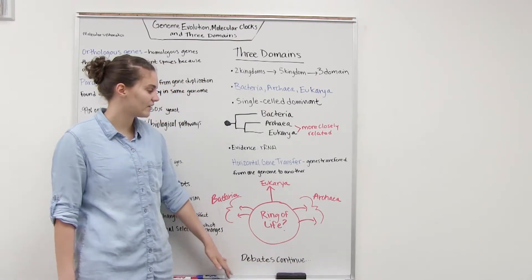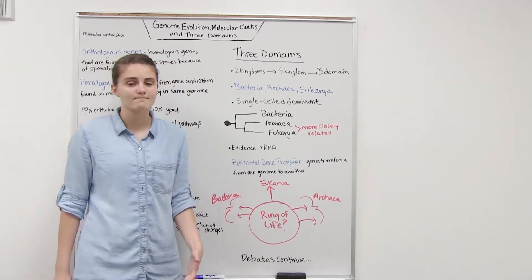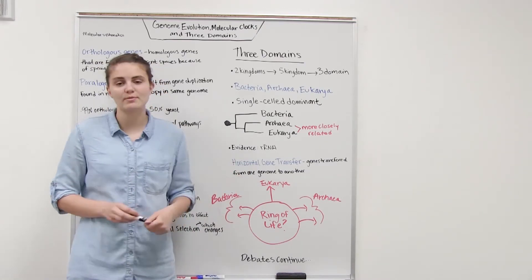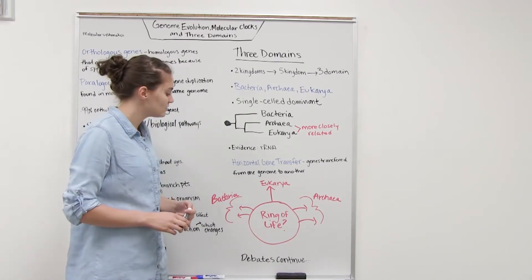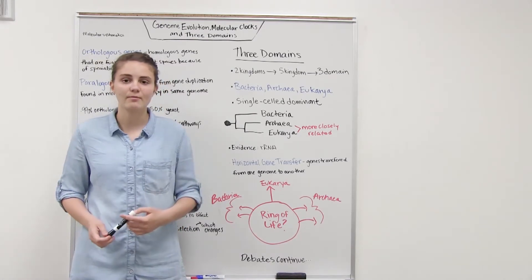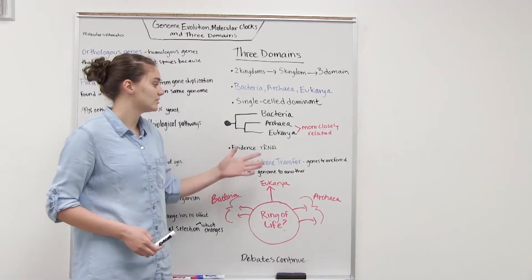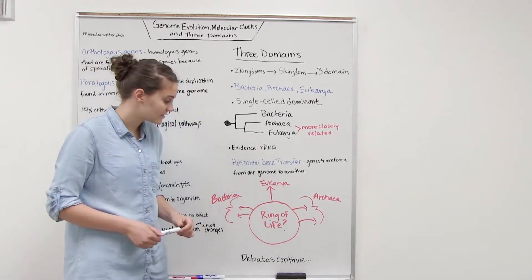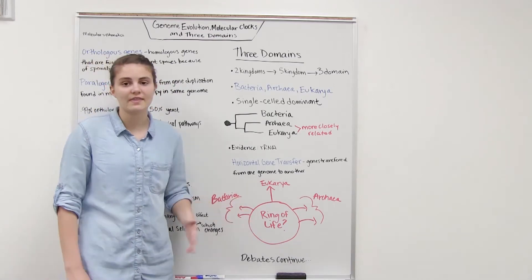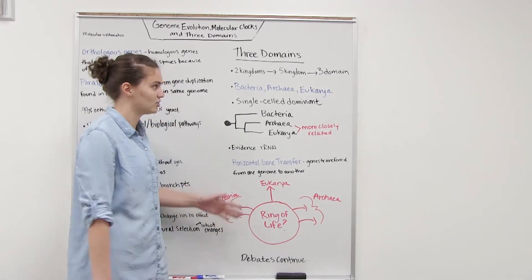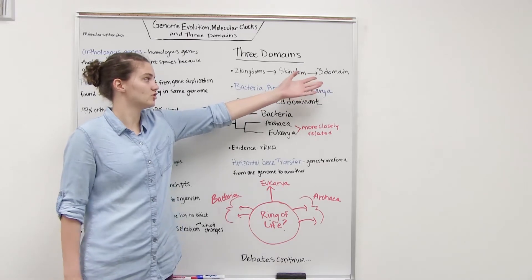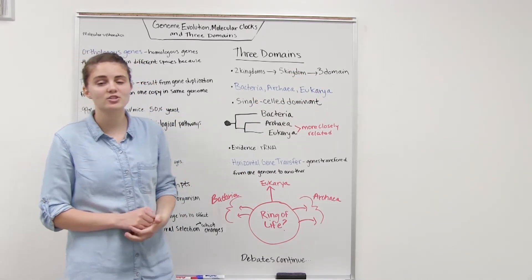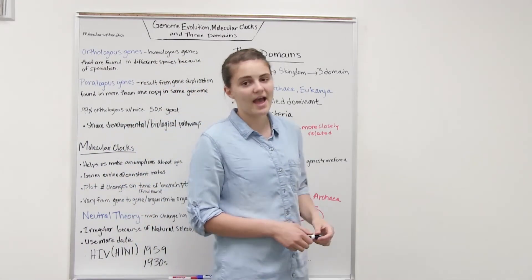Some of the difficulty in trying to figure out these relationships is that these divergences in this evolutionary tree happened so long ago and so we have limited data. But as we continue to investigate and get more data, the majority of it is going to be this molecular data of comparing these sequences. We'll be able to better understand these relationships and maybe our ideas will change. Who knows, maybe in the future we will change the three domain system to something else because that's how science works. We're always changing according to the data and the evidence that we have.